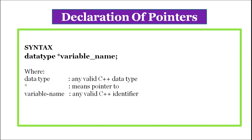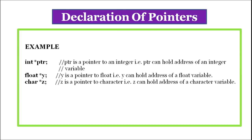Declaration of pointers. The syntax for declaring a pointer is: data type, star, variable name, followed by semicolon, where data type is any valid C++ data type. Star means pointer to, and variable name is any valid C++ identifier. For example: int star ptr — here ptr is a pointer to an integer, that is ptr can hold the address of an integer variable. Float star y — here y is a pointer to float, that is y can hold the address of a float variable. Char star z — here z is a pointer to a character, that is z can hold the address of a character variable.